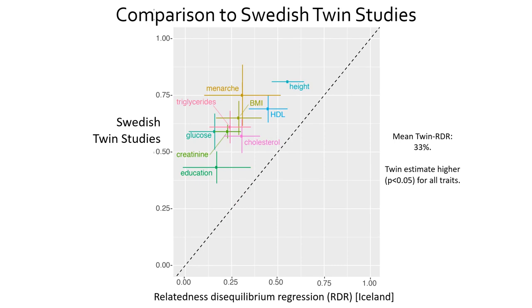I also compared to twin studies. Since Iceland's population is small, there aren't enough twins for a proper twin study, so I compared to Swedish twins as the next best thing. The Swedish twin estimates are on average 33% of the phenotypic variance higher than the RDR estimates — a mean difference of 33% — which seems like a large difference. While some differences could be due to having different samples, such a large difference indicates that twin estimates and genomic estimates that properly control for environment are giving different answers, which could be evidence for overestimation of heritability by twin studies.